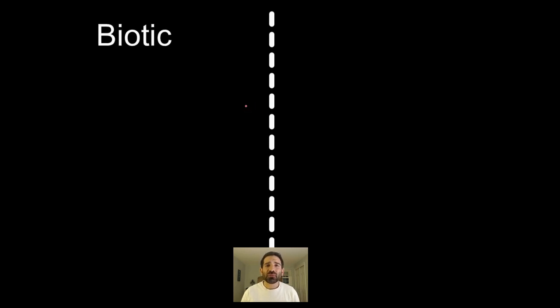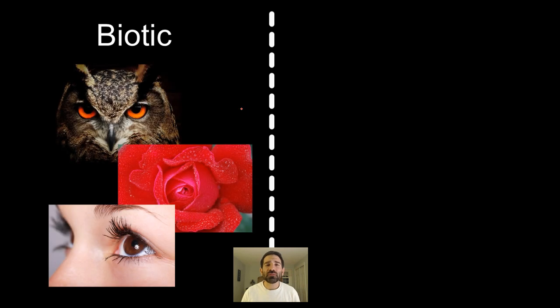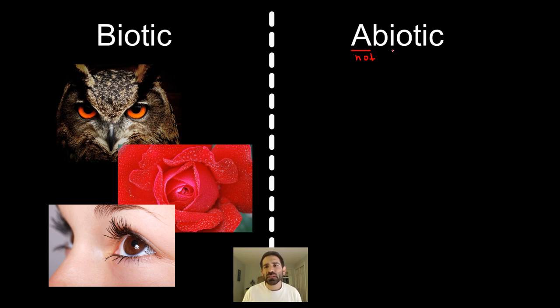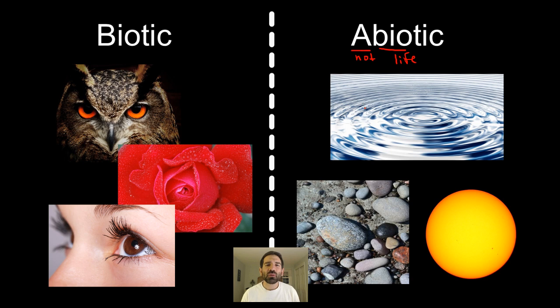Ecologists like to break the world up into two neat categories. The first one are biotic factors — those are the living factors in an ecosystem. The reverse of that are abiotic factors. That 'A' means not, and the bio in both cases means life. So these are non-living factors, and non-living factors would be like water, rocks, and sun.